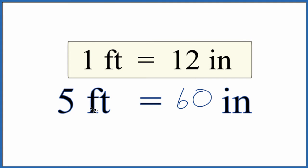There's another way people like to do it. You could say 1 is to 5 as 12 is to X, and now you can cross multiply, solve for X, and you'll get 60 inches.